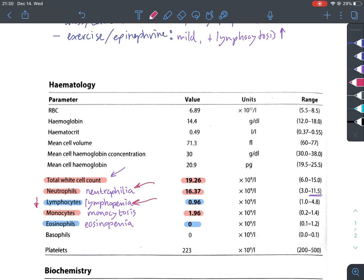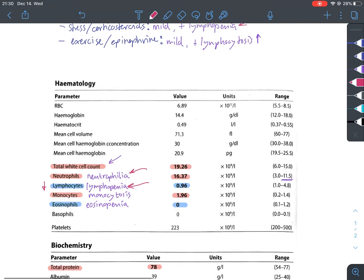So this is a typical stress leukogram. And I will mention that inflammation can also cause neutrophilia and monocytosis, as is the case here. But it wouldn't cause lymphopenia or eosinopenia. So we're going to stay with stress causing this.